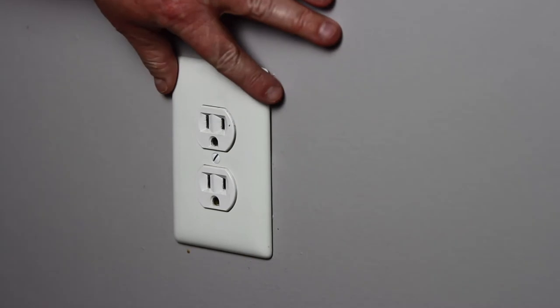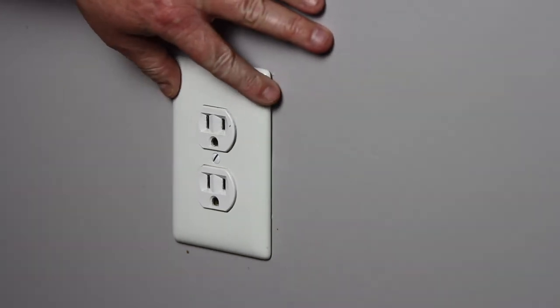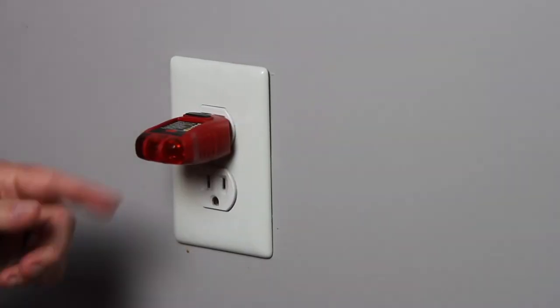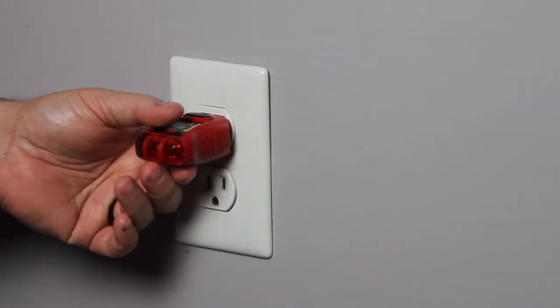Okay, today we're going to be tackling this loose outlet here. So, first thing we need to do is verify that we do have the electric turned off. As you can see we got both lights off so we are good to go.